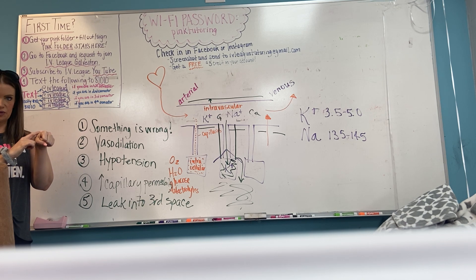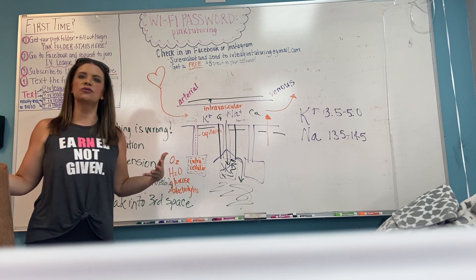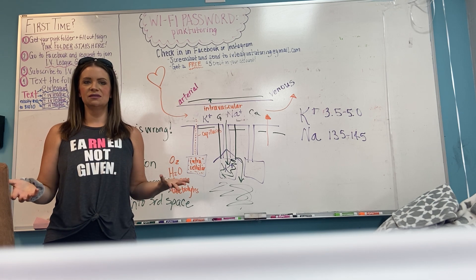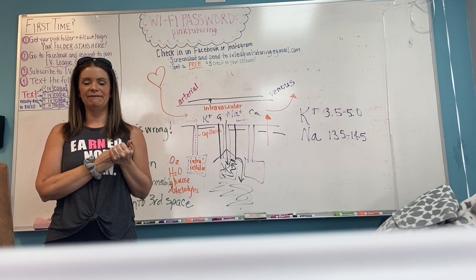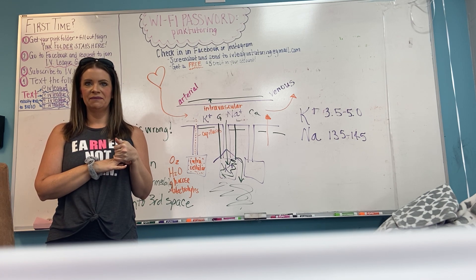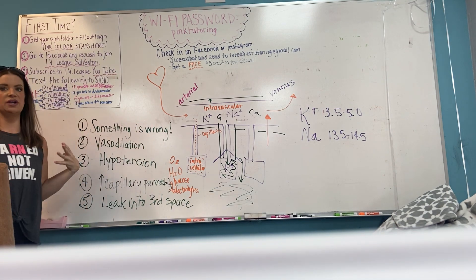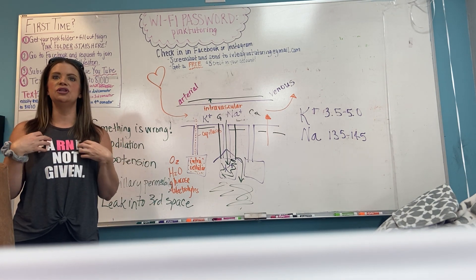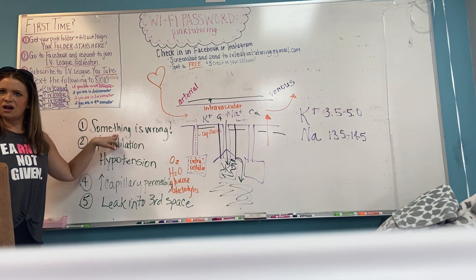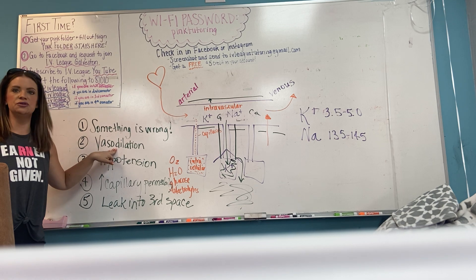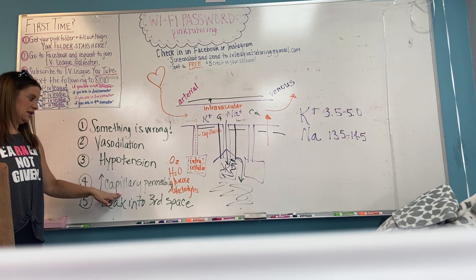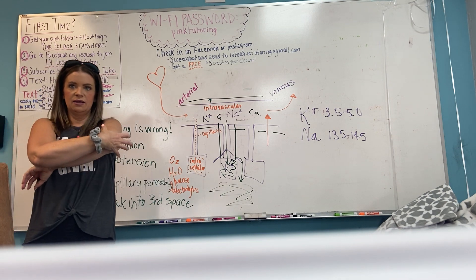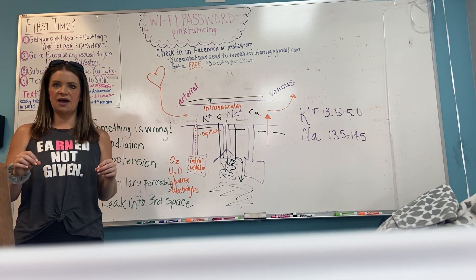Rheumatoid arthritis is an autoimmune disorder where joints swell. Autoimmune means you're fighting your own self — your body sees itself as a problem. Your body says something is wrong in the joints, which causes vasodilation, leading to hypotension, causing increased capillary permeability, which makes you leak into the third space. So the joints look big, swollen, and full of fluid — that's the same inflammatory process applied to an autoimmune condition.